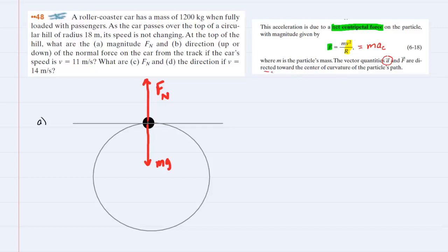The centripetal acceleration is directed towards the center of curvature of the particle's path. So the roller coaster car's centripetal acceleration would be pointing towards the center of this circle. The centripetal acceleration is pointing downward in this diagram. And what we will do in this question is assume that the downward direction is negative and the upward direction is positive.